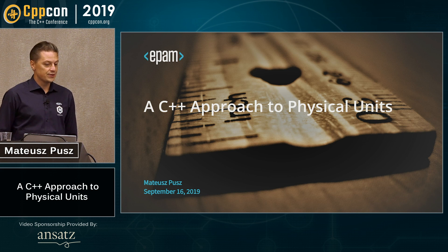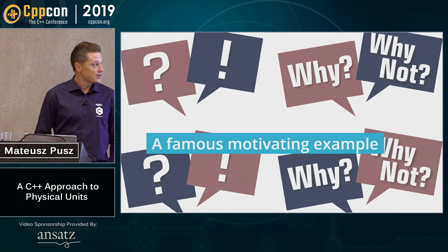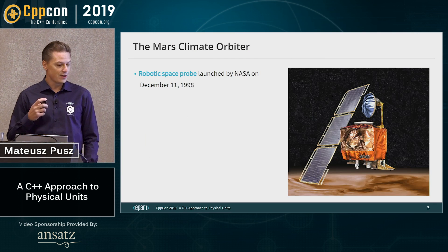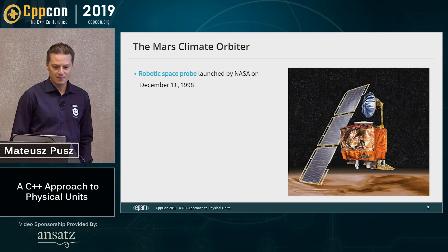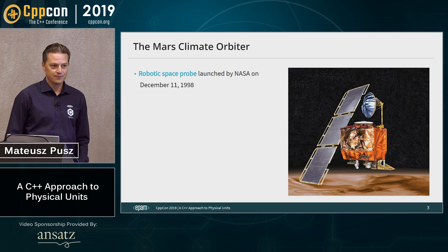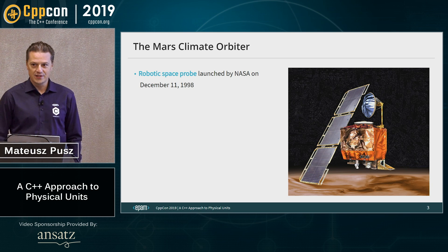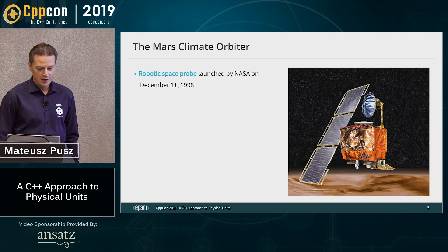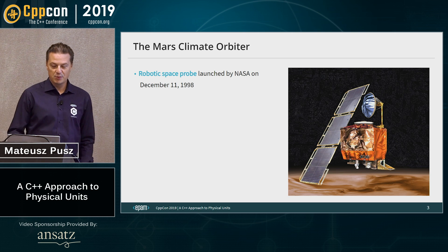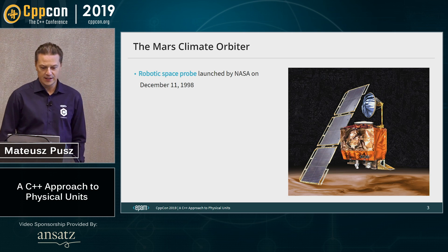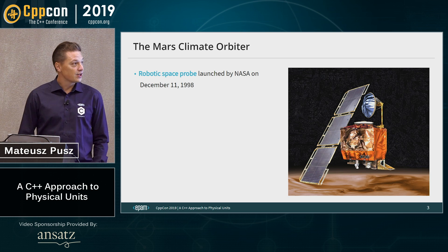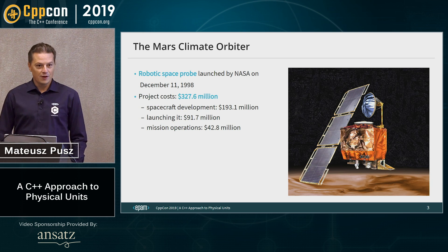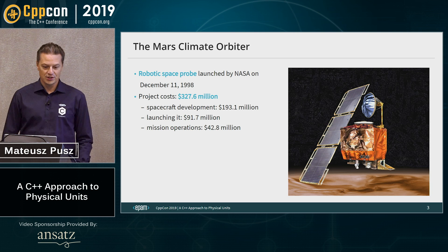But why do we care about this? Probably you are aware of the story of the Mars Climate Orbiter. This was one of the famous disasters in our IT industry. This was a robotic space probe launched in December 1998. It cost a lot of money for development, for the launch, for operations and so on.